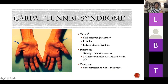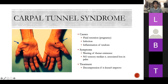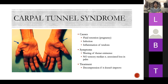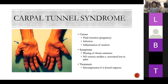Carpal tunnel syndrome: causes include fluid retention, infection or inflammation, or overuse of tendons from typing all day. You can get wasting of the thenar eminence. There will be no median nerve sensory loss in the palm — you will get sensory loss in the lateral three and a half digits, but not the palm, because the palmar cutaneous branch splits off before the carpal tunnel. So if you have sensory loss in the palmar region, it's not carpal tunnel syndrome and the injury is further back. Treatment is decompression if symptoms don't improve.